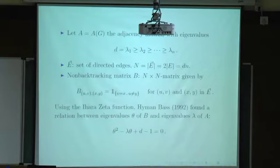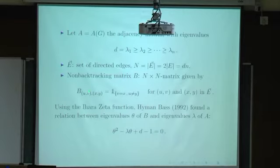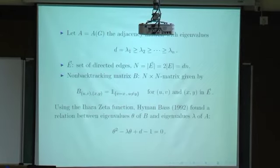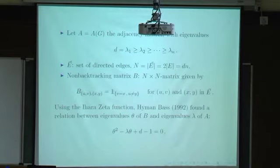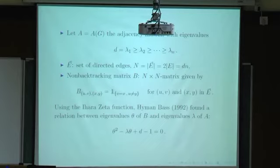Formally, the non-backtracking walk is a Markov chain on the edges of the graph. The matrix B is an adjacency matrix for directed edges: a directed edge is adjacent to all directed edges coming out of its head node. This is no longer a symmetric matrix — it's not a reversible Markov chain — so one must be more careful with spectral methods, since orthogonality of eigenfunctions and real eigenvalues are not directly available.